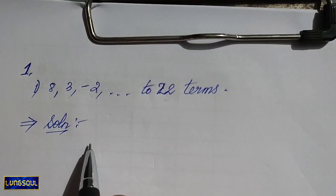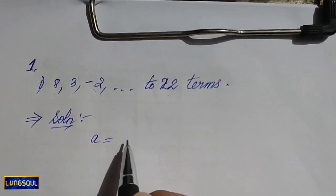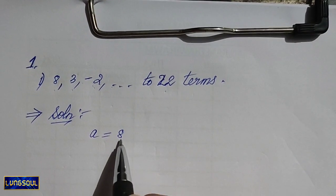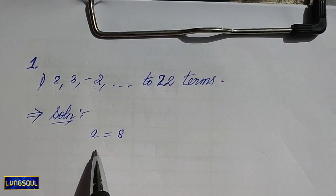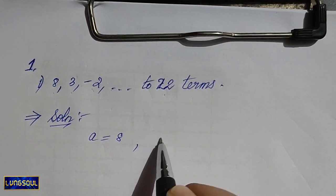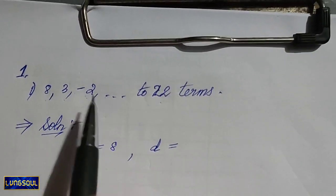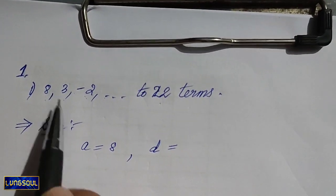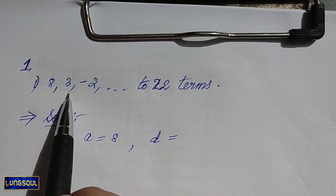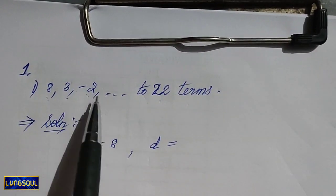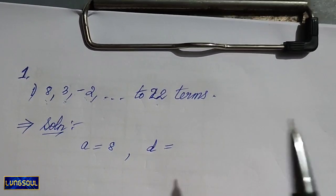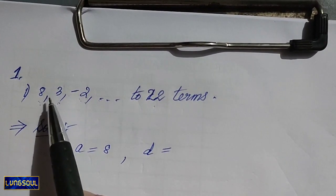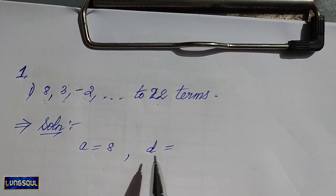Solution: a1 is equal to 8 — that is the first term. Common difference d equals a2 minus a1, which equals a3 minus a2.